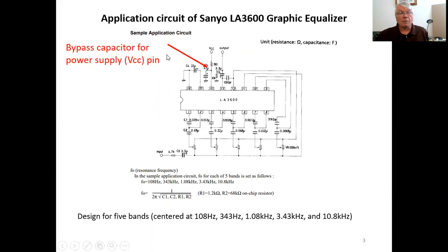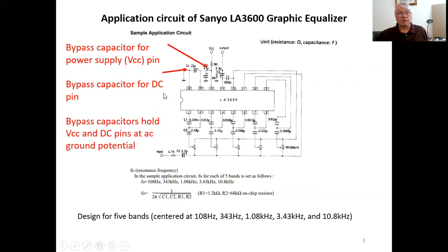Now, this is the bypass capacitor for the power supply pin, which the chip also labels as VCC. This is a bypass capacitor for a pin that's labeled the DC pin. Bypass capacitors hold these VCC pins and DC pins at ground potential for AC. That is, there's no time varying voltage of those pins. There can be DC potential, but no time varying voltage, no AC potential.